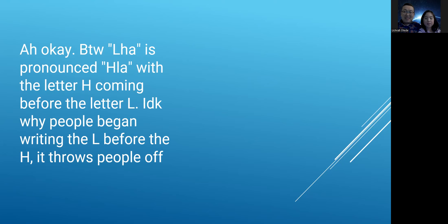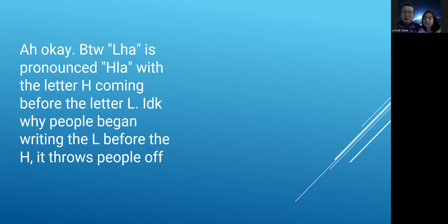A comment says: 'Lha is pronounced kla, with the letter H coming before the L. I don't know why people began writing the L before the H — it throws people off.' The person who left this comment has a Tibetan background, so this is based on Tibetan pronunciation. But this won't really help Mongolian people pronounce it correctly — it just adds more knowledge, and it seems in Tibetan the pronunciation is different.